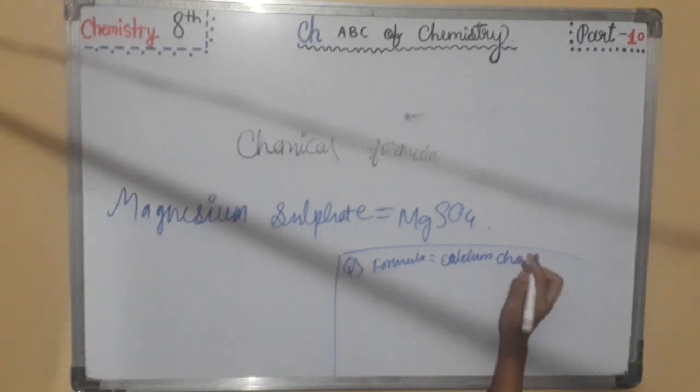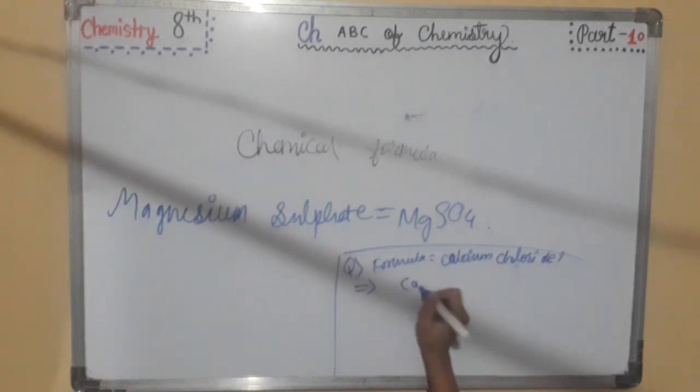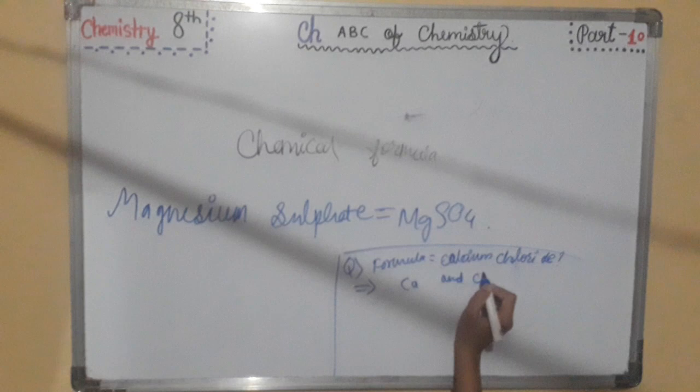Our step one will be, write the symbol of the combining units side by side. Means, symbol of calcium chloride is Ca and Cl.